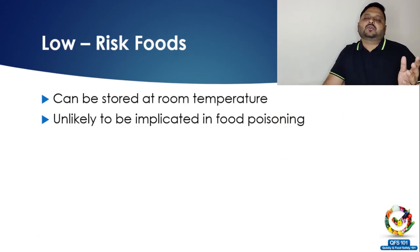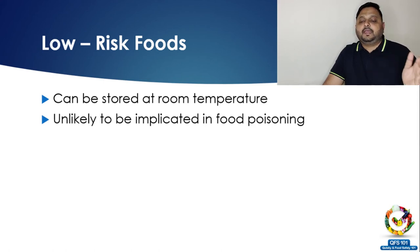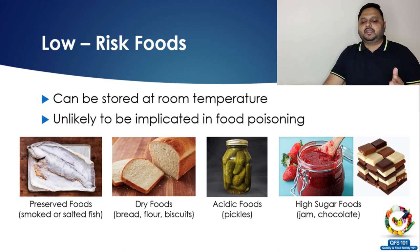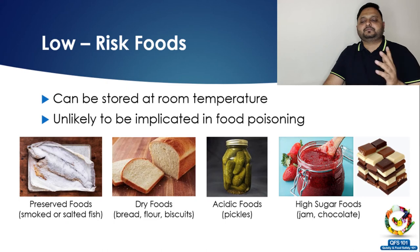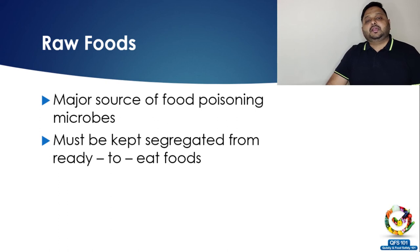Opposite to high risk foods, we have low risk foods. These are called low risk because they have some kind of control over the growth of bacteria. For example, these foods can be stored at room temperature and are unlikely to cause food poisoning. Examples include smoked and salted fish — preserved food items — as well as dry foods like baked goods, breads, and biscuits, acidic food items like pickles, or high-sugar foods like jams and chocolates.